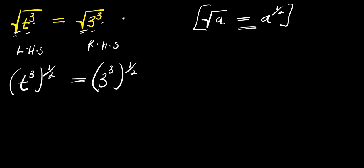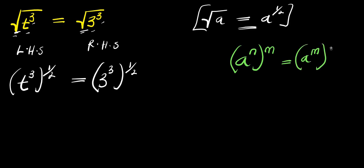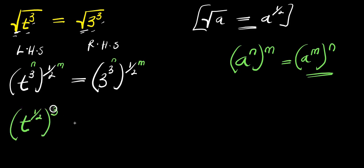Now let's consider this other identity. If you have a to the power of n raised to the power of m, this equals a to the power of m raised to the power of n — the powers change. Applying this identity, the m will come inside the bracket while n will be outside. So we have t power 1 over 2 raised to the power of 3, equals 3 power 1 over 2 raised to the power of 3.